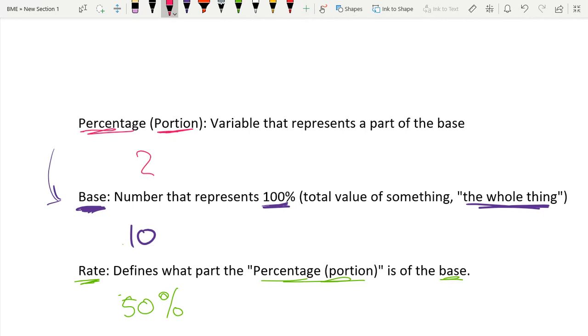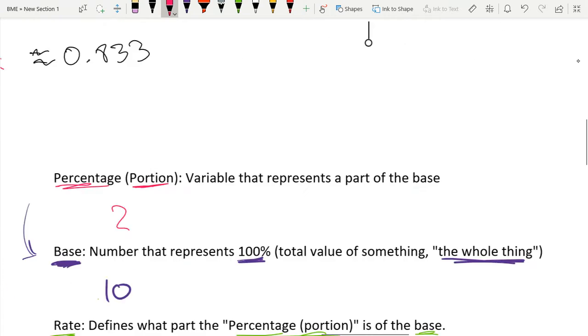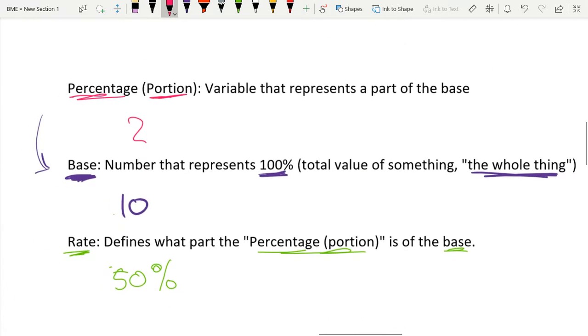And now these terms can be a bit confusing just because our rate is a percentage and this over here is called the percentage, but it's actually just a part of the base. And that's very important to remember. This is a part of the base, so this is not going to be a percentage. Our rate, however, is going to be expressed as a percentage.